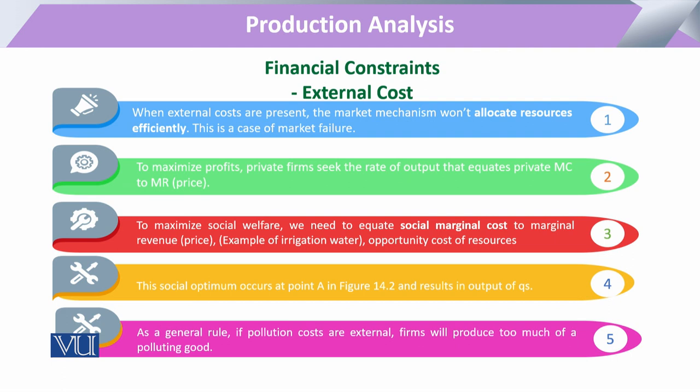To illustrate social marginal cost, consider Pakistan as an agrarian country. Irrigation water is the basic resource used for our farms and is freely available. For that irrigation water used for agricultural farms, farmers pay only a nominal amount per acre per year after one year.